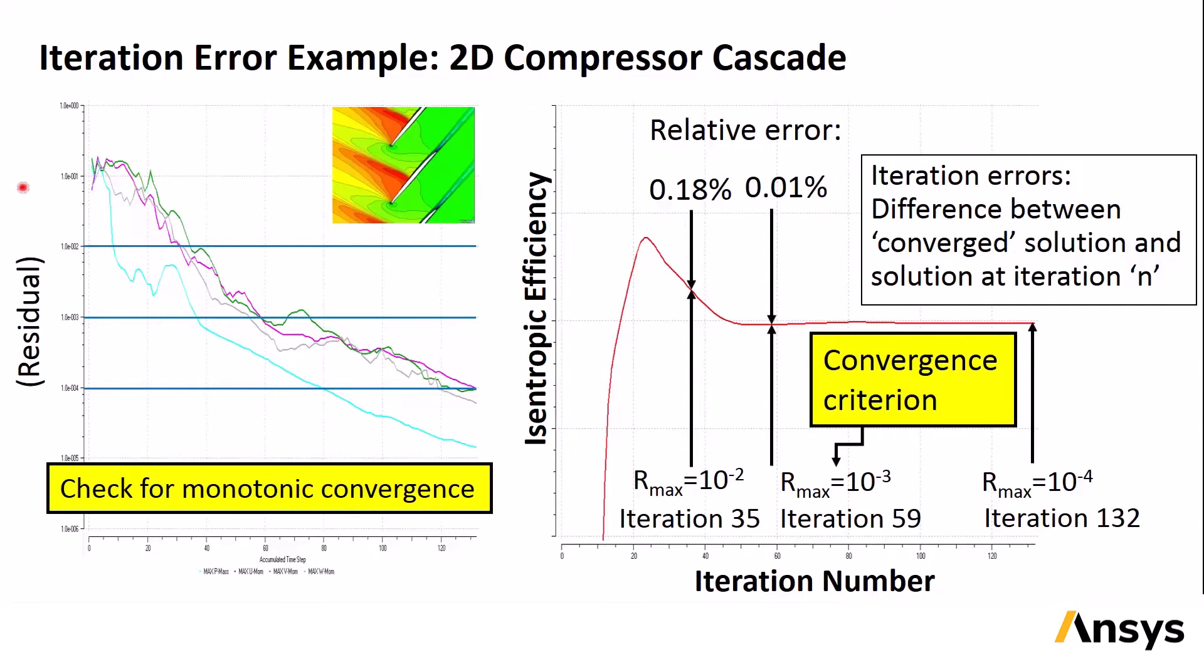When judging this solution, we want to see a steady decrease of the residuals, which is true here, and we also want to see that after a certain number of iterations, the target variable, in this case isentropic efficiency, stops changing as additional iterations are performed. The plot on the right shows that the isentropic efficiency is no longer changing at around 100 iterations, and the black lines on the curve indicate where the residuals have fallen below certain threshold levels. The left-most black line corresponds to the upper blue vertical line on the residuals plot, the center black line to the next vertical blue line, and so on.